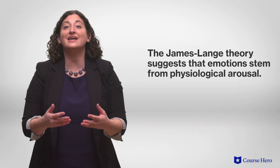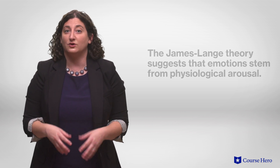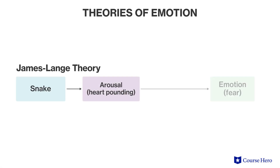The James-Lange theory suggests that emotions stem from physiological arousal. Different arousal patterns are associated with different feelings — happiness, sadness, and so on. For instance, if a snake were nearby, the sympathetic nervous system would activate the fight-or-flight system to manage a threat, causing a sharp increase in heart rate and respiration. According to the James-Lange theory of emotion, this physical response would then lead to the emotion of fear.